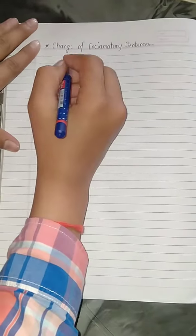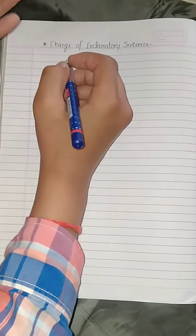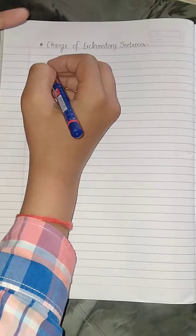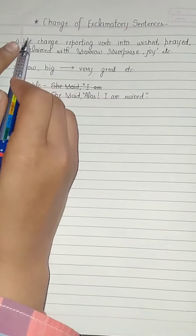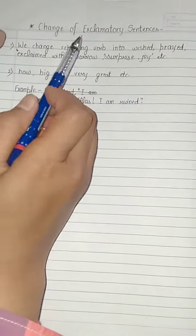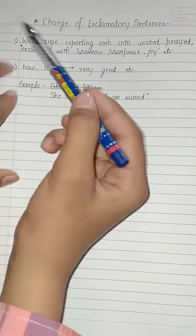Hello guys, you are welcomed in part 3 of direct and indirect speech. In this part, I will tell you how to convert exclamatory sentences of direct into indirect. In interjections, we express our feelings like we wish or we pray.